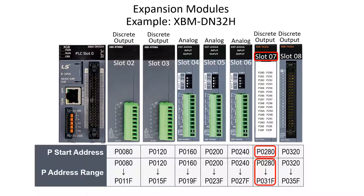Though every expansion module slot is allocated 64 bits, the physical addresses in each slot are dependent on the I/O count of the discrete module.